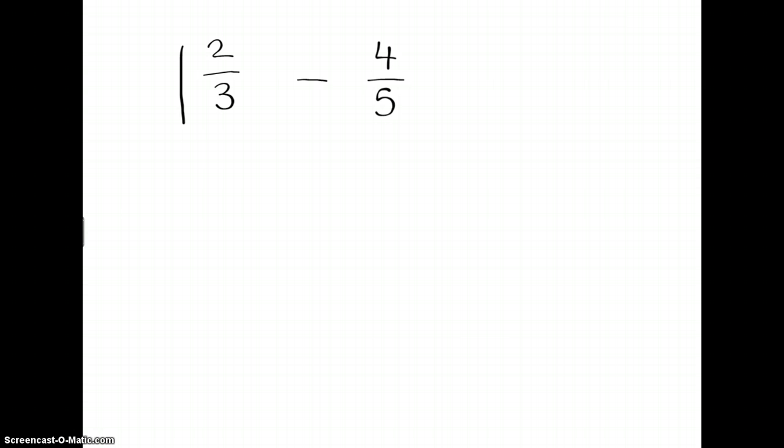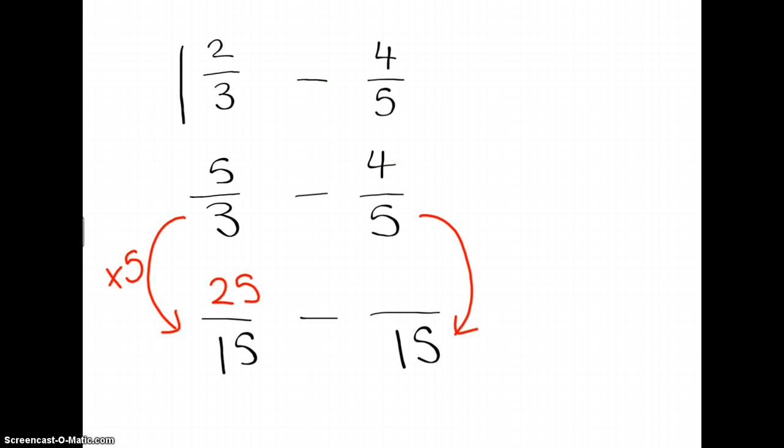Subtracting fractions works in just the same way, but in this question, we've got 1 and 2/3 for the top value. What we need to do is make it into a top-heavy fraction. So 1 and 2/3 is the same as 5/3, minus 4/5. 5 and 3 both go into 15. That fraction has been multiplied by 5, because 3 times 5 makes 15. So the top number becomes 25. That fraction has been multiplied by 3, so the top number becomes 12. 25 minus 12 is 13, and your bottom number stays 15. So that answer is 13/15.